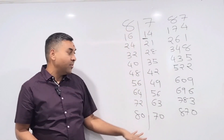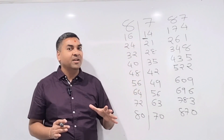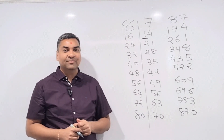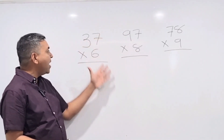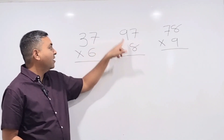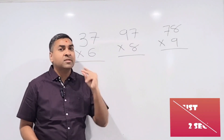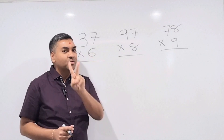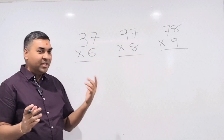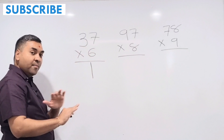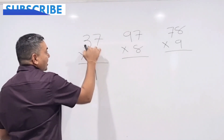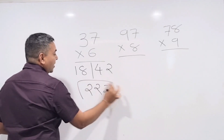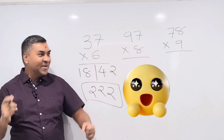Now let's do individual mid-table questions — like 37×6, 97×8, 78×9 — in just two seconds. For 37×6: draw a line, 3×6=18 on the left, 7×6=42 on the right. Last digit is 2, keep it. Add the carry: 18+4=22. So 37×6=222. Done! Can you see the technique?